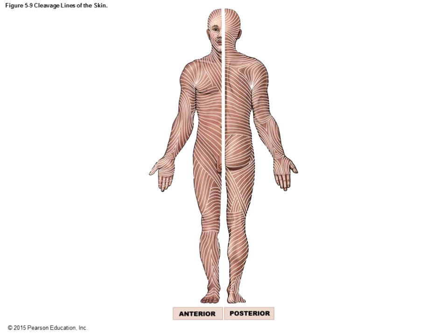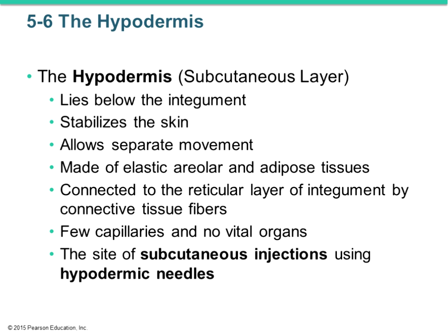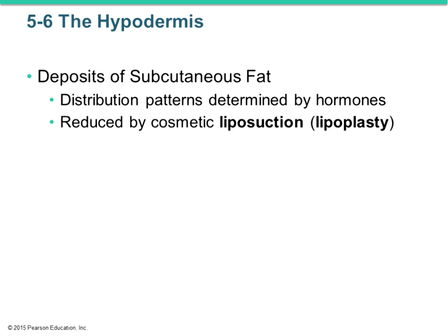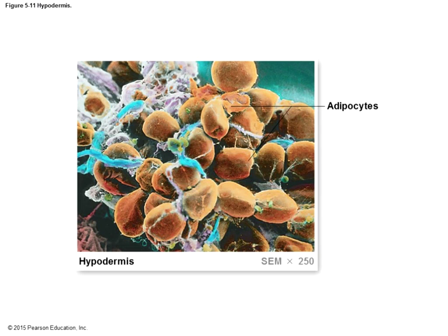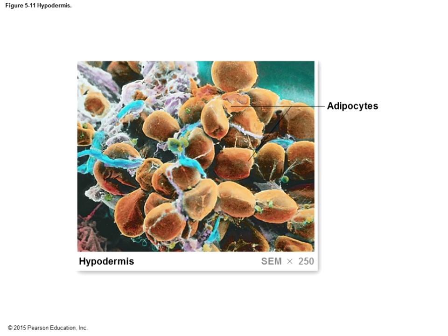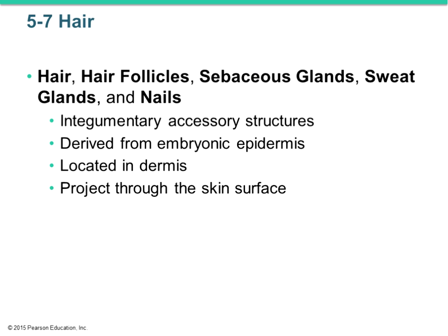The hypodermis — also called the subcutaneous layer — is truly not part of the skin; it's beneath it. It helps stabilize the skin and allows for separate movements. It's made of areolar and adipose tissues with no vital organs, making it a good location for subcutaneous injections using a hypodermic needle. Most of the fat we carry is found here — called subcutaneous fat or sub-Q fat — and this is what is reduced in liposuction.